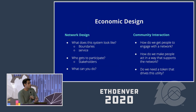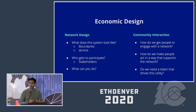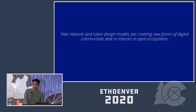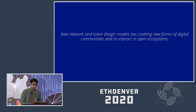I like to think about economic design in two different buckets. First, network design, which defines the parameters or boundaries within a system — the rules, the service you provide, and who the stakeholders are. Second, community interaction: now that you've defined your stakeholders, how do you incentivize them to actually engage with the network? How do we make people act in ways that support the network? How do we figure out whether a token can drive utility? New network and token design models are creating new forms of digital communities that enable anyone to interact with open ecosystems — a prime example being the DAO-focused nature of this hackathon.